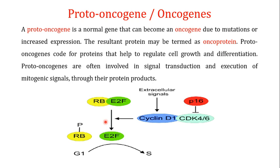The first topic is the proto-oncogene. A proto-oncogene is a normal gene that can become an oncogene due to mutation or increased expression. These proto-oncogenes are a normal part of the cell, required for normal cell division and growth. When mutations occur in proto-oncogenes, the resulting gene is known as an oncogene, and the cell loses its ability for normal growth and differentiation — leading to abnormal cell growth, which is a hallmark of cancer.